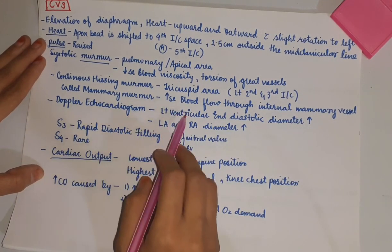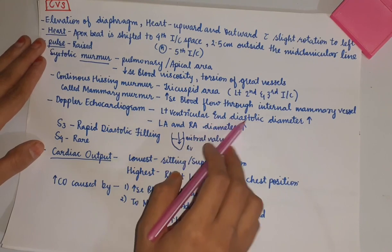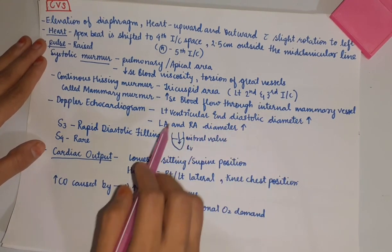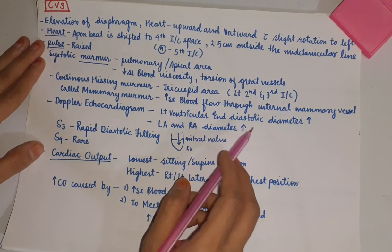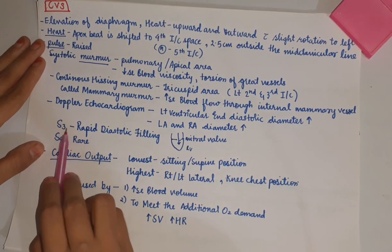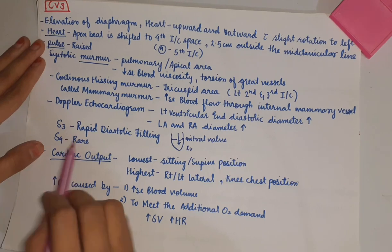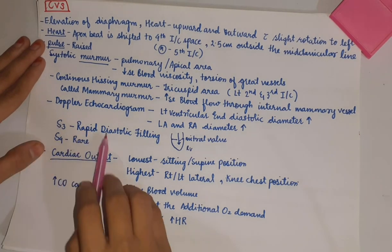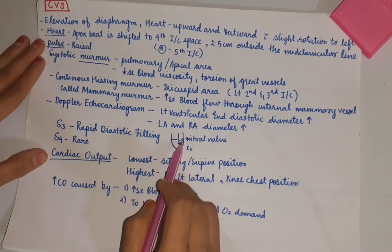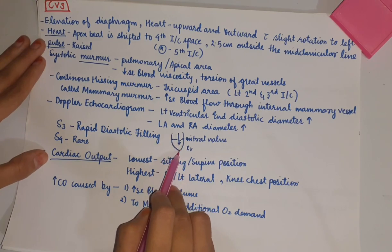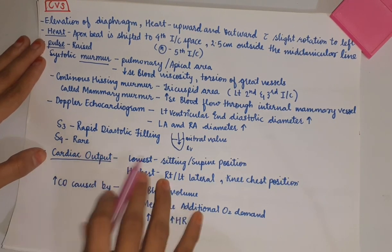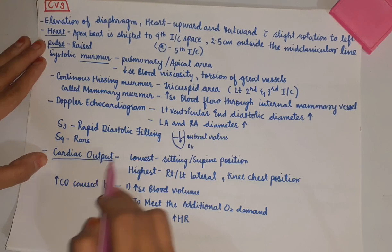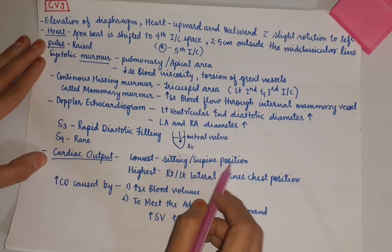On Doppler echocardiogram, it shows left ventricular end-diastolic diameter is increased, and left atrial and right atrial diameter is also increased. The S3 sound is heard due to rapid diastolic filling — the increased blood volume strikes the right ventricular wall, producing this sound. S4 is rarely heard.